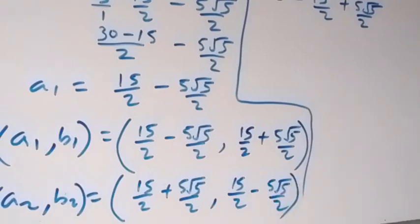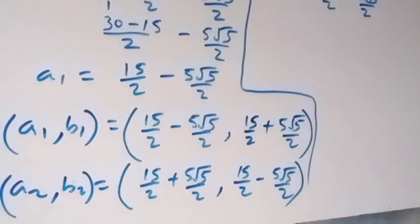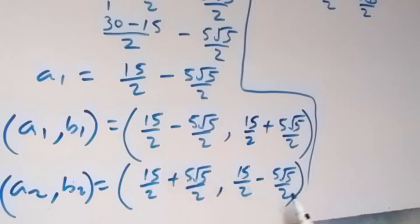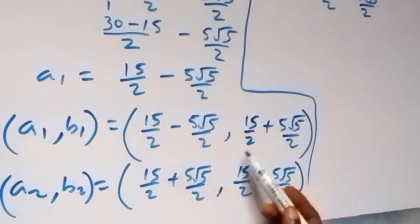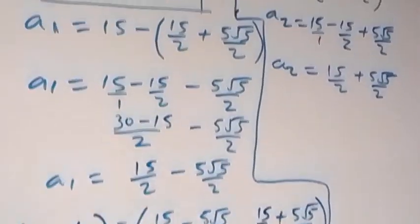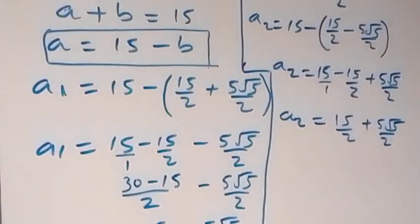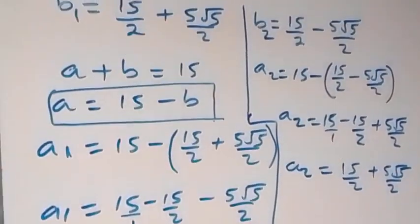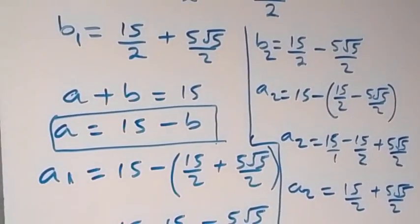We have these two sets of solutions. Notice that A1 is similar to B2, and B1 is similar to A2 — they are symmetric pairs. Thank you for watching. Don't forget these steps. Subscribe to my channel and turn on the notification bell. See you next class.